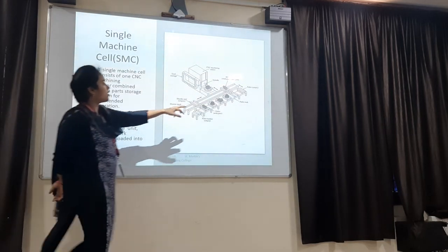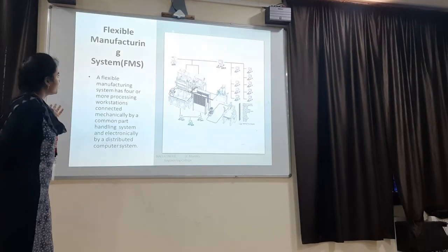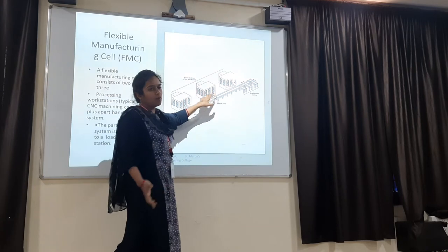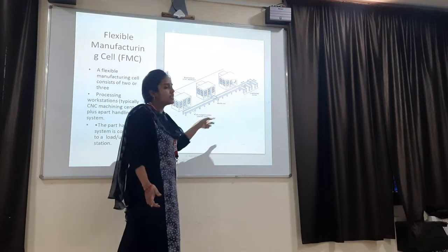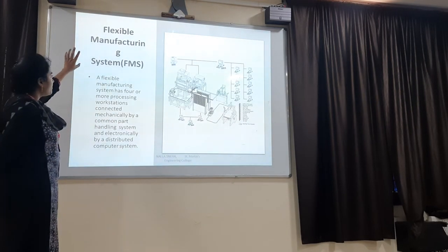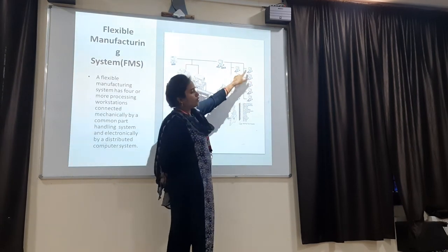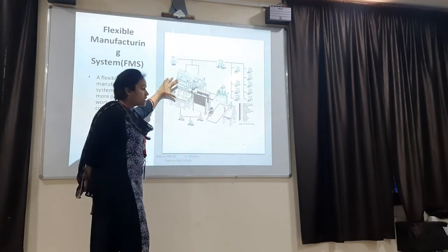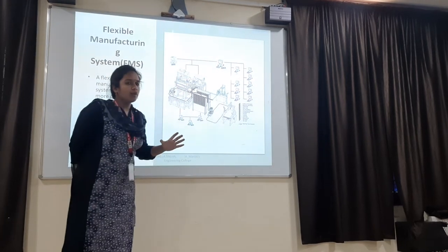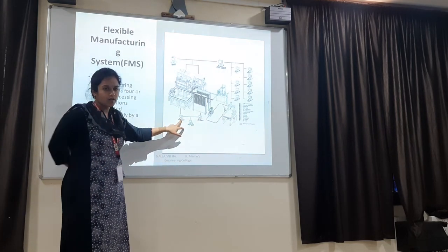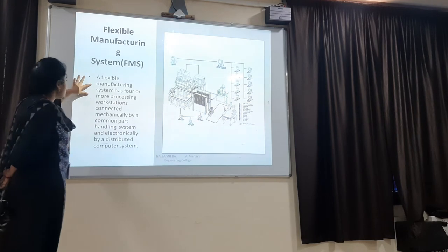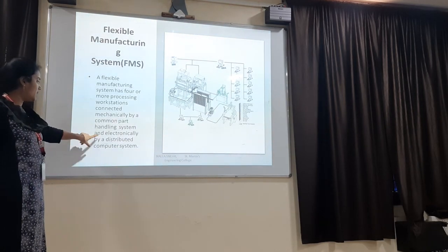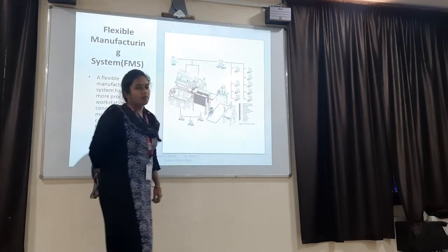Completed parts are periodically unloaded at this point. Next is a flexible manufacturing cell — two or more workstations, with the remaining arrangement the same. In a flexible manufacturing system, there are a number of computer controls connected with electronic devices to the workstations. Monitoring is done by these computer controls for all the workstations. A flexible manufacturing system has four or more possible workstations connected mechanically by a common part handling system and electronically by a distributed computer system.